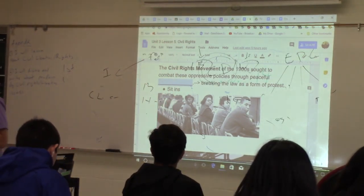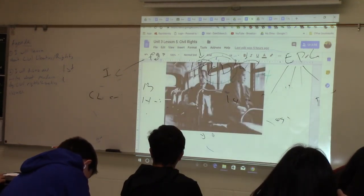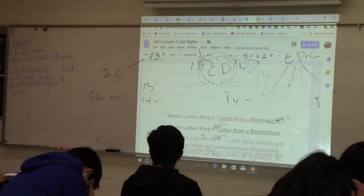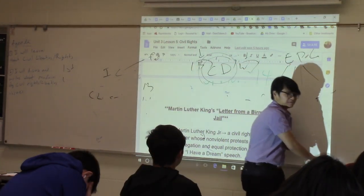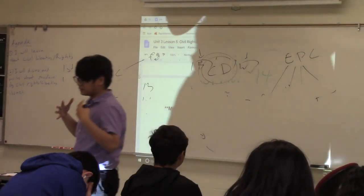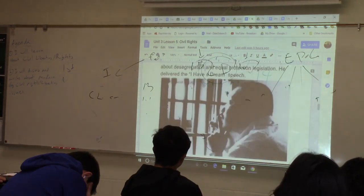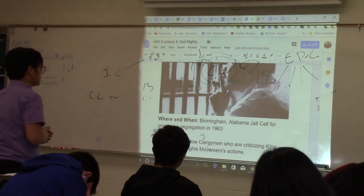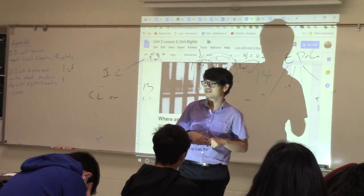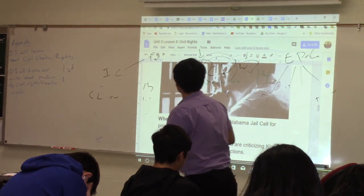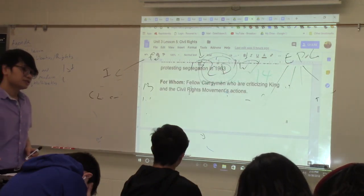Civil disobedience is breaking the law as a form of protest. Sit-ins, for example, technically broke the law because participants weren't allowed in those places, but they were disobeying a law they felt was unjust. One of your required documents is the Letter from Birmingham Jail. The author is Martin Luther King, a civil rights and religious leader. He wrote it while in an Alabama jail because he had committed civil disobedience — he broke a law as a form of protest.